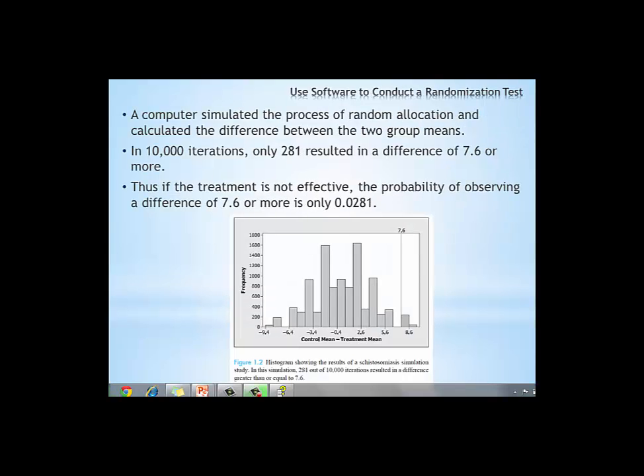When I used a computer to simulate this randomization process, we did it by hand three times, but with a computer I did it 10,000 times. And in those 10,000 iterations, only 281 times did we observe a difference of 7.6 or more. In other words, there's less than a 3% chance of observing a difference this large. This tells us that since it is so unlikely to observe a difference of 7.6 or more just by random chance, it's unlikely that the null hypothesis is true.